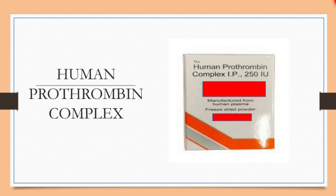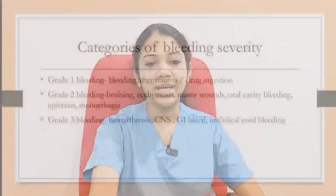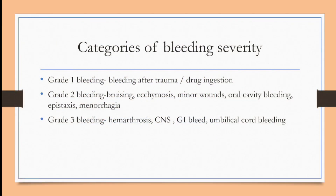If a patient presents with bleeding, there are different grades. Grade 1 is minor bleeding after trauma or drug ingestion. Grade 2 includes bruising, ecchymosis, minor wounds, oral bleeds, epistaxis, or heavy menstrual bleed. Grade 3 is bleeding into the joints (hemarthrosis), intracranial bleed, GI bleed, or umbilical cord bleeding.